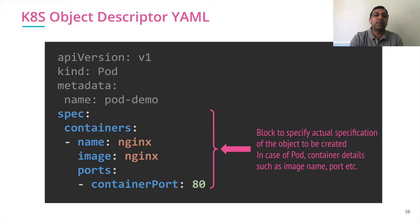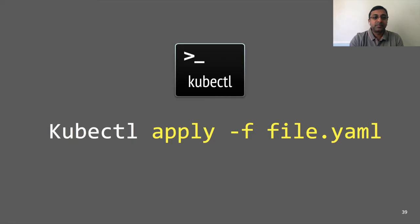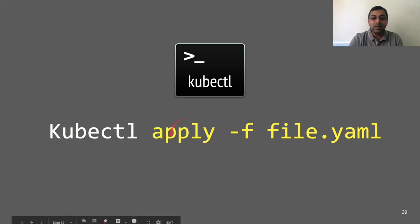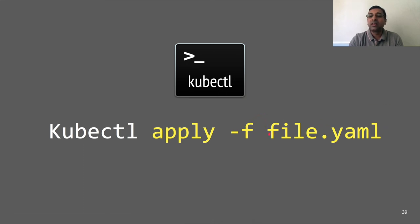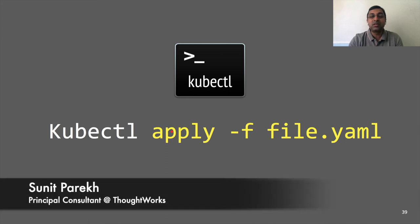Every other object type may have different specification details. To apply this specification or object to Kubernetes, use the command kubectl apply. Apply is the operation, then minus f and the file name — you specify which file you want to apply to the Kubernetes cluster, meaning what object you want to apply. That's all about Kubernetes objects.